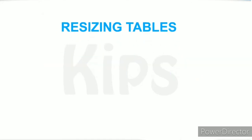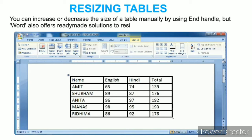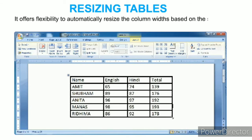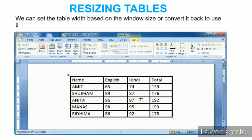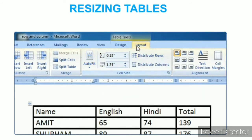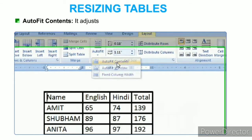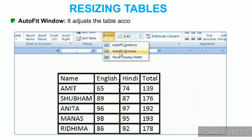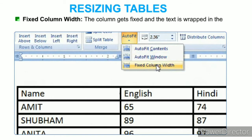To resize tables, you can increase or decrease the size manually using the end handle, or use the Auto Fit option. Click the Auto Fit button in the Cell Size group on the Layout tab. The Auto Fit drop-down menu displays three options: Auto Fit Contents, which adjusts column width according to text entered; Auto Fit Window, which adjusts the table according to the margin set on the window; and Fixed Column Width, where the column is fixed and text wraps within the same cell.